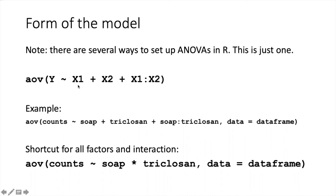one X for each factor. We put the one factor, then a plus sign, then the other factor. If we have an interaction term that we want to test for, then we add that in as a third factor. The X1 colon X2 is an indication that this is an interaction between X1 and X2.